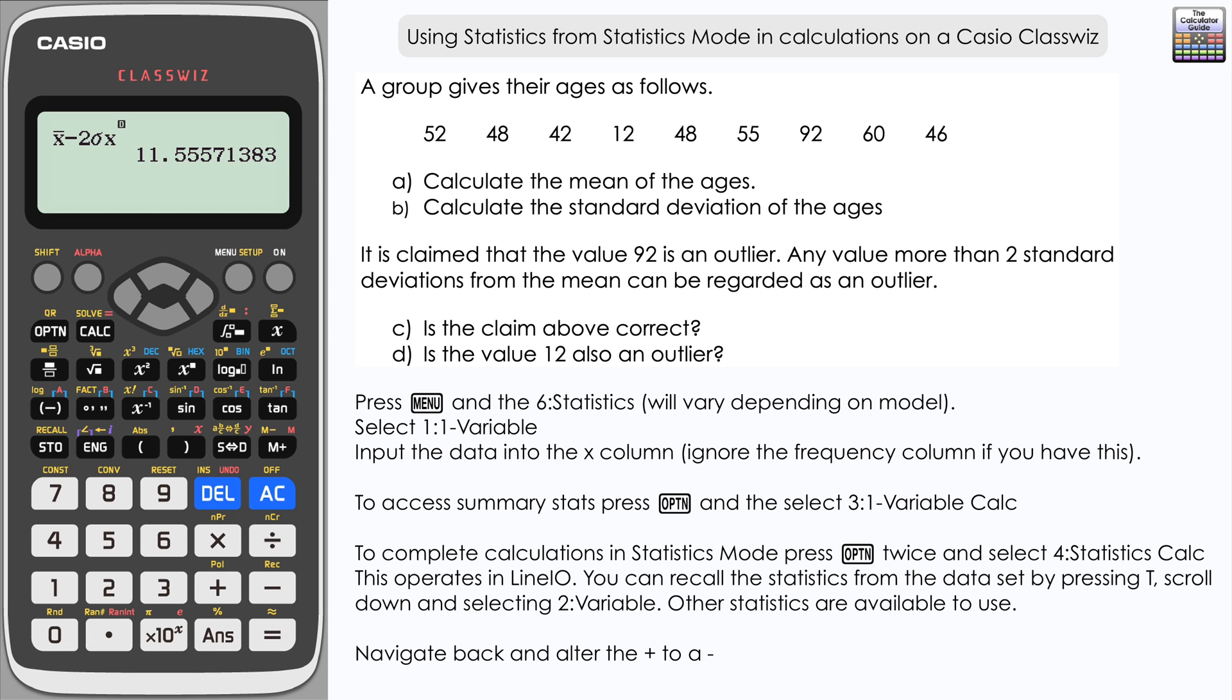We can see that the value here is 11.55. Now 12 is greater than 11.55, which means it's closer to the mean and within two standard deviations of the mean. Therefore, the value of 12 actually isn't an outlier.